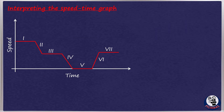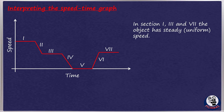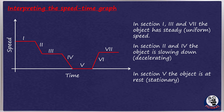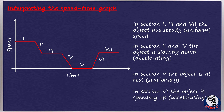Just as we can represent motion by a distance-time graph, we can also use a speed-time graph. A speed-time graph shows how an object's speed changes as it moves. In sections 1, 3, and 7, the object has steady (uniform) speed. In sections 2 and 4, the object is slowing down — decelerating. In section 5, the object is at rest — stationary. In section 6, the object is speeding up — accelerating.